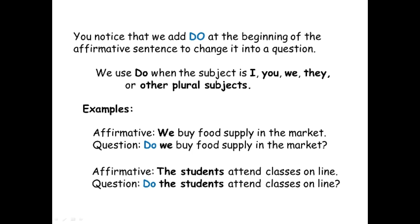Here are other examples. When we use subjects we, you, they, and I, and other plural subjects, we use do to form the questions. Sentence number one: we buy food supply in the market. The subject is we, so we use do. The question is: do we buy food supply in the market? Next example: the students attend classes online. The subject is the students, which is a plural subject, so we use do. The question is: do the students attend classes online?